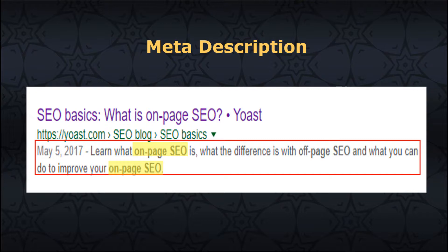Metadata description: this is the short paragraph of text placed in the HTML of a web page that describes its content. At times, Google will show users the contents of the meta description tag in the search snippet. Although meta description does not impact Google rankings, Google does use click-through rate (CTR) to determine whether your page is a good result. Limit your metadata description tag to 320 characters. It should be actionable in an active voice, match the content, contain the focus keyword, and be unique.